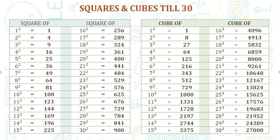19 square 361, 20 square 400, 21 square 441, 22 square 484, 23 square 529, 24 square 576.